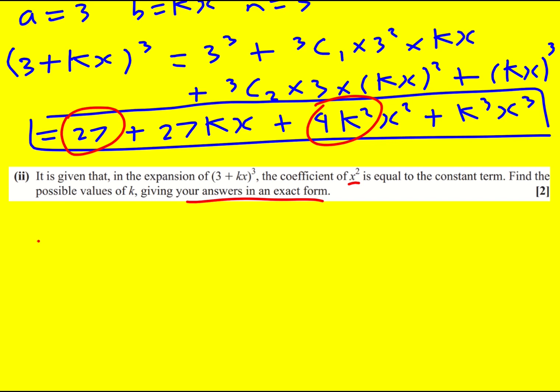So the coefficient of x squared is 9k squared, and that must equal the constant term 27, which means k squared is equal to 3, and therefore k is going to be plus or minus, don't forget about the minus, plus or minus root 3. That is an exact form.